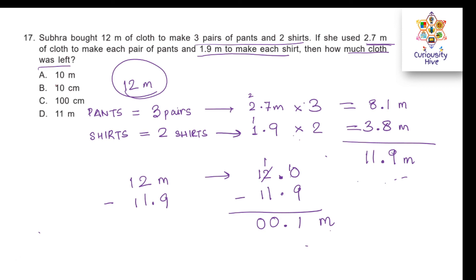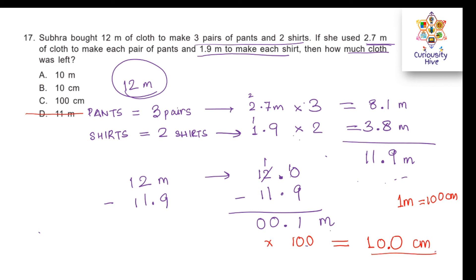Looking at the answer options, they are mostly in centimeters. Remember 1 meter equals 100 centimeters. So we multiply 0.1 by 100. 100 times 0.1: there is one digit after the decimal point, so placing the decimal gives 10 centimeters. Our answer is 10 centimeters, which is option B.